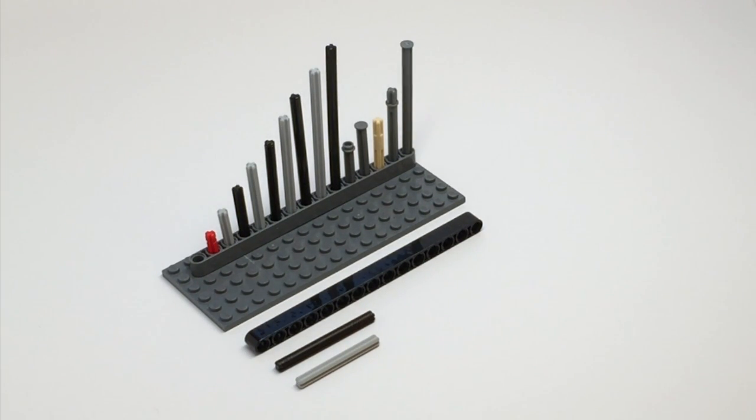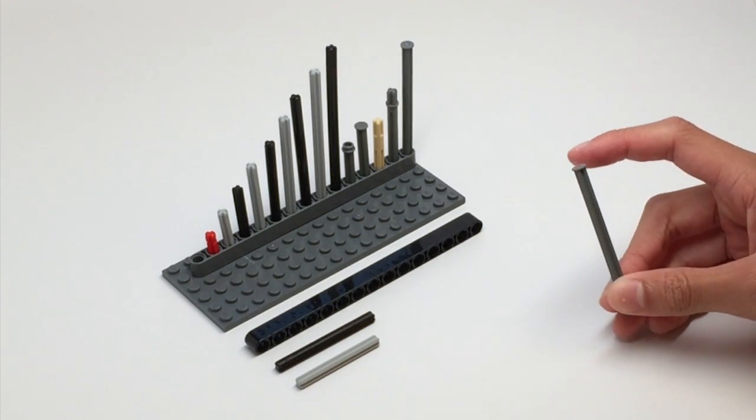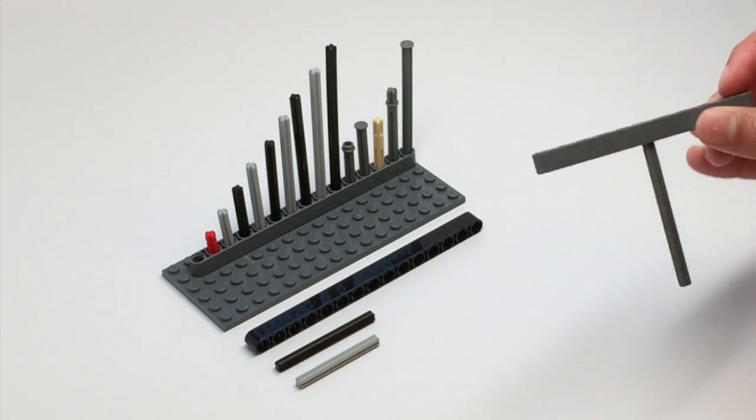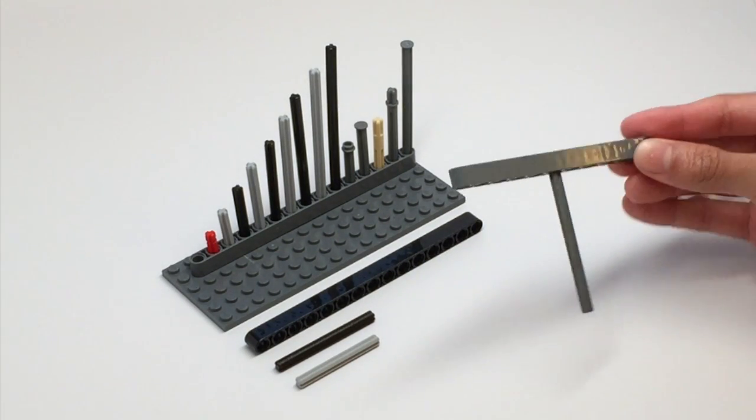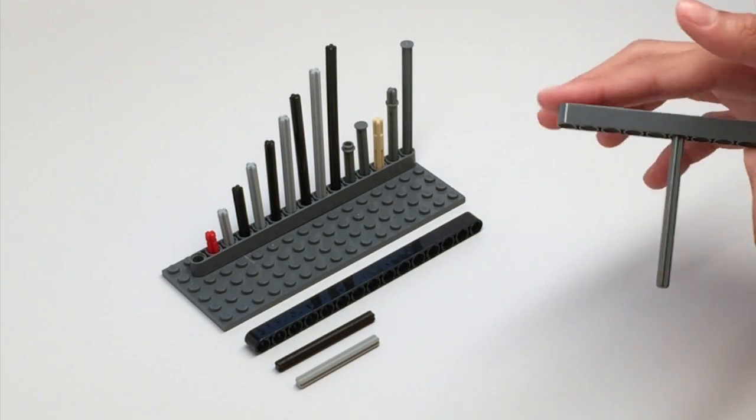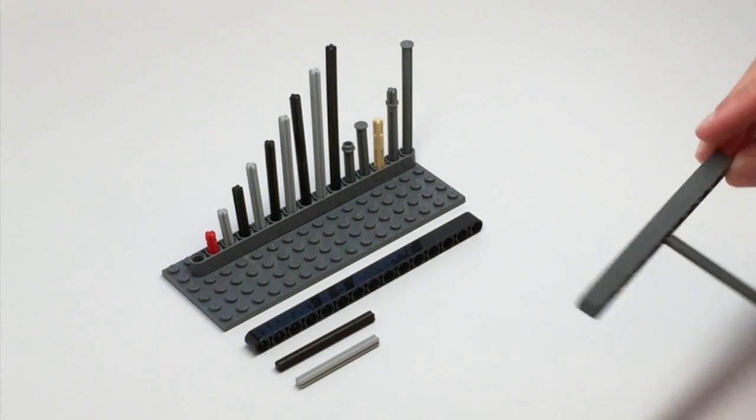We also have these flat top axles that have a flat top, and what they do is they allow you to have a little stopper when you put it through a beam. If you notice, it's flush along the edge, so it's completely flat on top. It's kind of like a blocker.